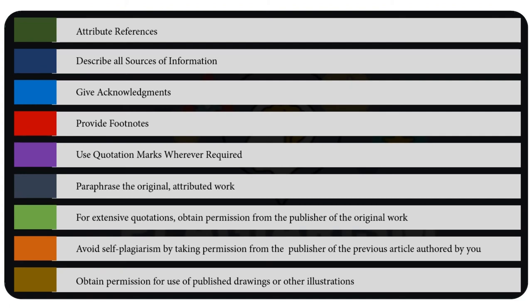Avoid self-plagiarism. Self-plagiarism is quoting your own work — we discussed it in the last module. Avoid self-plagiarism by taking permission from the publisher of the previous article authored by you. It is my article but it is already published, so I ask permission from the publisher even though I have copyright of the article — but to use it somewhere else, I still need to ask permission from the publisher. And for published drawings and other illustrations, use permission from the agency who produced them. These are in a nutshell the best ways to avoid plagiarism when dealing with an article or academic publication.